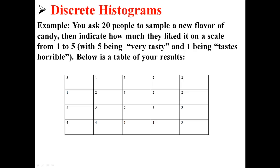Here's my example. You ask 20 people to sample a new flavor of candy, then indicate how much they liked it on a scale from 1 to 5, with 5 being very tasty and 1 being tastes horrible. Here is a table of your results. So here I just have 20 different scores from 1 to 5.